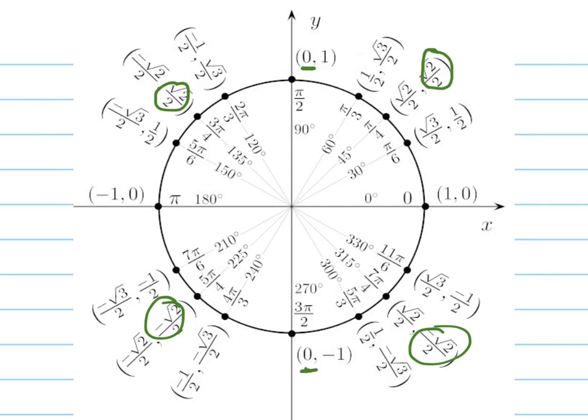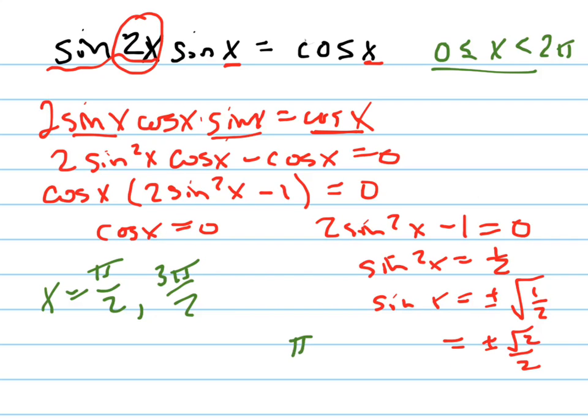So all of the pi over 4s, because it's plus or minus. So it's pi over 4, 3 pi over 4, 5 pi over 4, and 7 pi over 4. So those are your six answers right there.